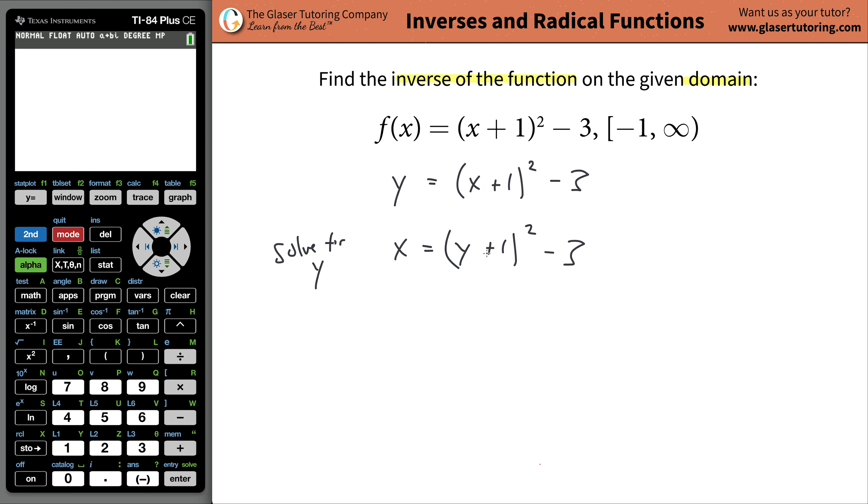Okay, so we're going to solve this for y, so what we're going to do is we're going to first add the three on over to the left-hand side because we have to isolate the y all by itself, and we always get to take care of addition and subtraction if we have that first. So it's going to be x plus three is equal to now y plus one squared.